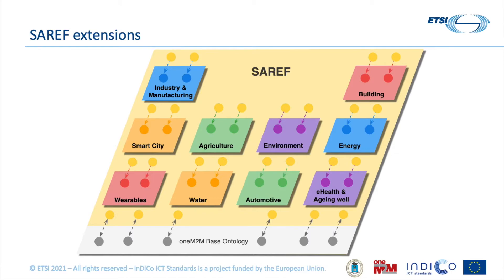SAREF is not intended to be used as an ontology by itself, but as an umbrella ontology that is able to interchange and integrate data from different sectors. It is already aligned with the oneM2M-based ontology and over time different extensions have been developed to increase the scope of this umbrella. You can think of it as a glue that helps collect information that is cross-sectorial. Right now SAREF has 10 different extensions covering buildings, energy, environment, agriculture, smart city, industrial manufacturing, wearables, water, automotive, and e-health and aging well.